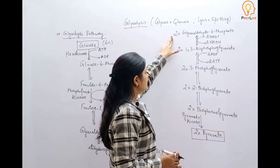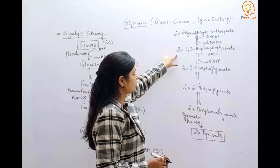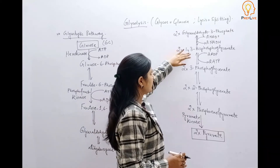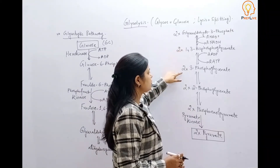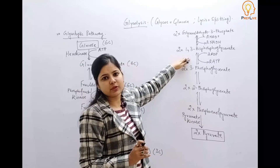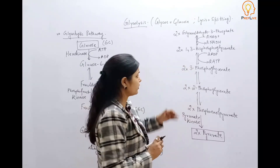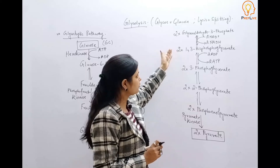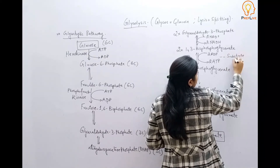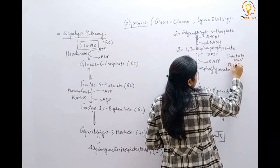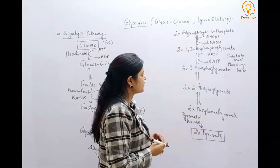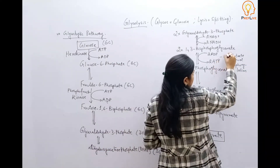These two molecules of glyceraldehyde-3-phosphate get converted into two molecules of 1,3-bisphosphoglycerate, and we have two NADH released. Then two molecules of 1,3-bisphosphoglycerate get converted into two molecules of 3-phosphoglycerate. At this step, substrate-level phosphorylation releases two molecules of ATP — because there are two molecules involved, two molecules of ATP are released.